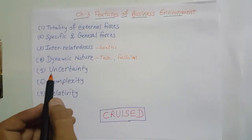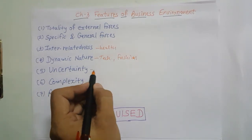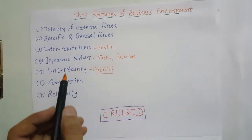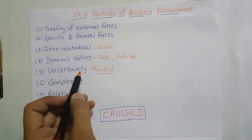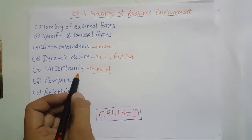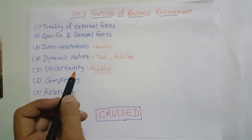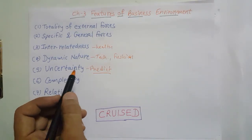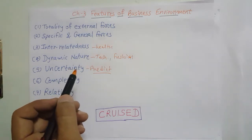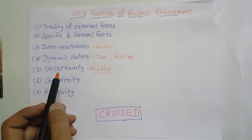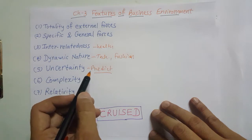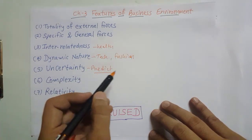The fifth feature is uncertainty — we cannot predict the business environment. Because it is uncertain, we don't know what is going to happen in the future. Technological changes are frequent, especially in information technology, fashion industry, political matters, and social matters. We are not able to understand what is going to happen in future, so business environment is uncertain — it is not predictable.